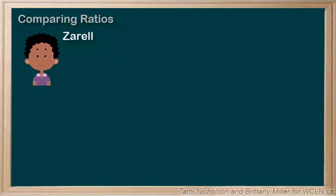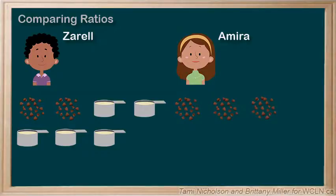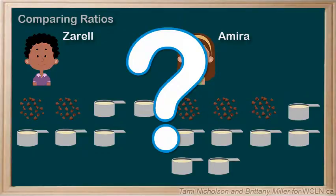Zarell made cookies with the ratio of two cups of chocolate chips to five cups of cookie dough. Amira made cookies with the ratio of three cups of chocolate chips to seven cups of cookie dough. Which cookies will have a higher ratio of chocolate chips to cookie dough?